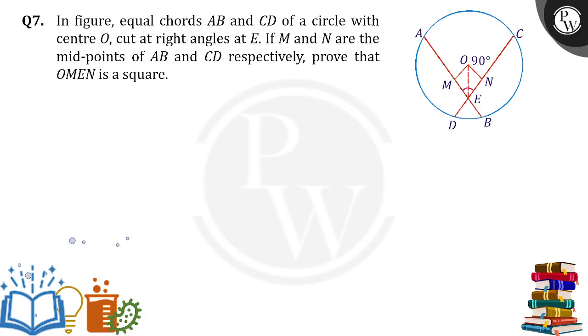Hello everyone, in figure equal chords AB and CD of a circle with center O cut at right angles at point E. If M and N are the midpoints of AB and CD respectively, prove that O, M, E, N is a square.